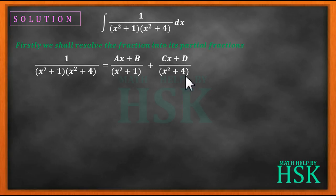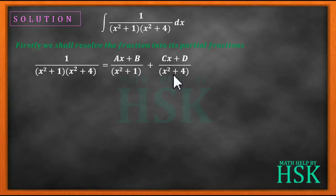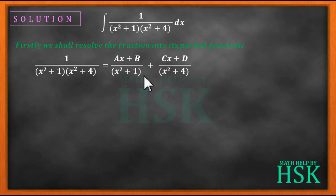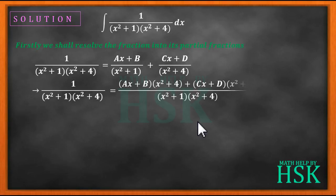Here we have written Ax + B because both the factors are quadratic. So we write Ax + B in the first case and Cx + D in the second case. Now we are going to take the LCM of the right-hand side so that the denominators cancel.